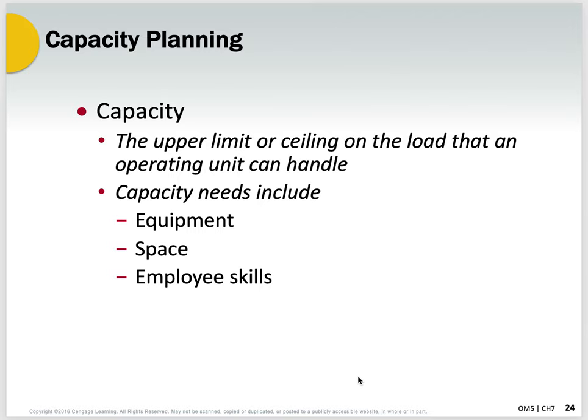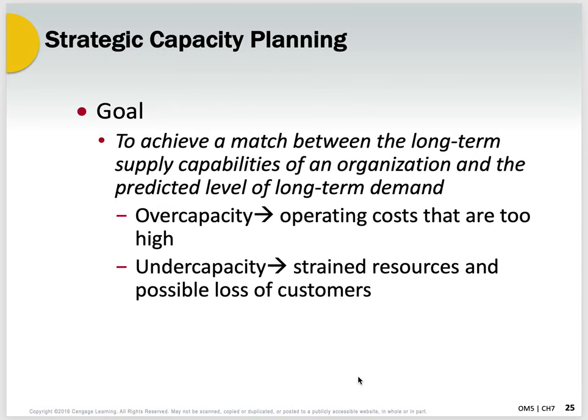Capacity is like an upper limit or ceiling on the load that an operating unit can handle. It's based on equipment, space, and people. The goal is to achieve a match between the long-term supply capabilities of an organization and a predicted level of long-term demand. We want to meet our demand now, but we also want to meet our demand in the future. If we're over capacity, operating costs become too high.